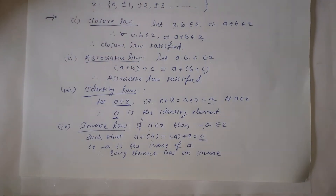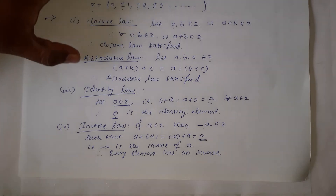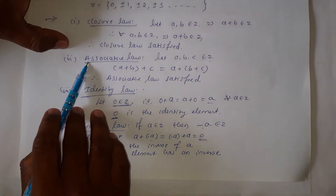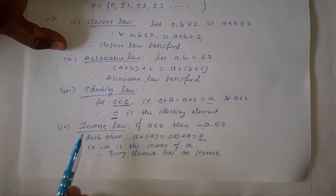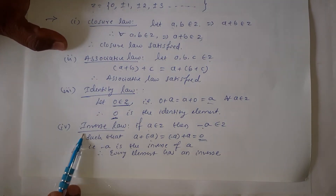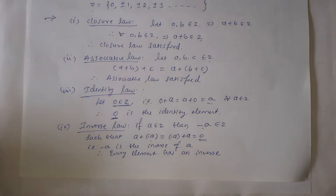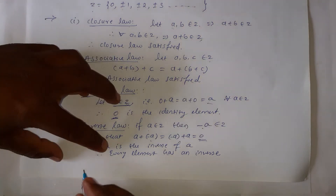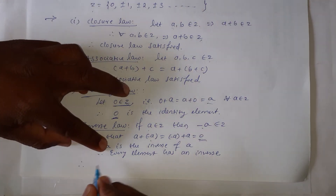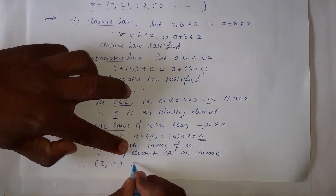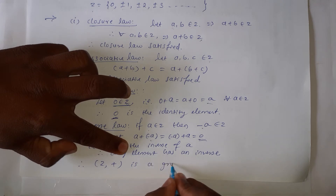All four laws — closure law, associative law, identity law, and inverse law — are satisfied for the set Z under the binary operation addition. Therefore, (Z, +) is a group.